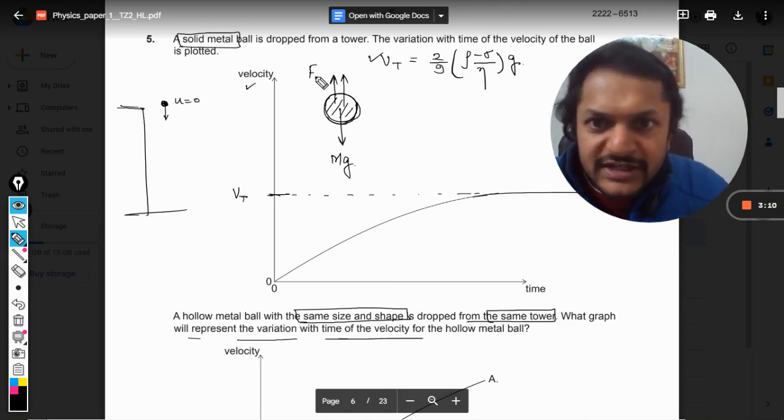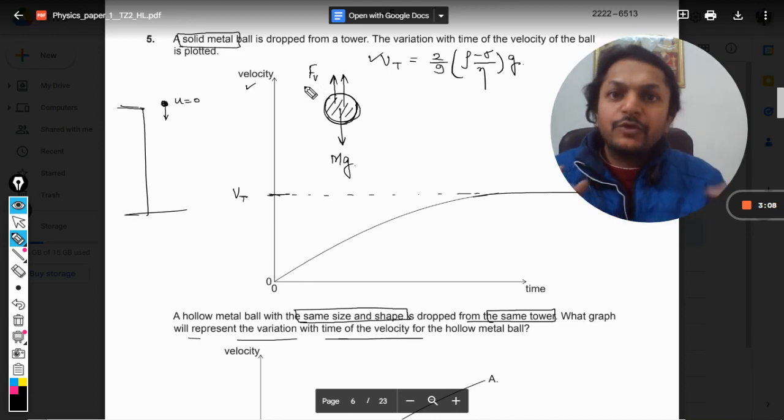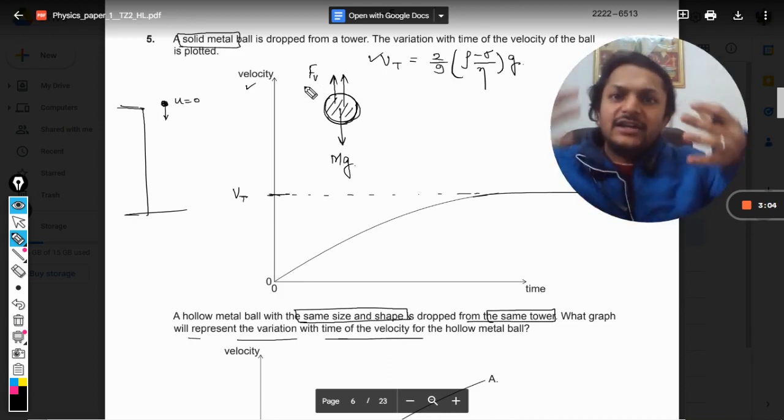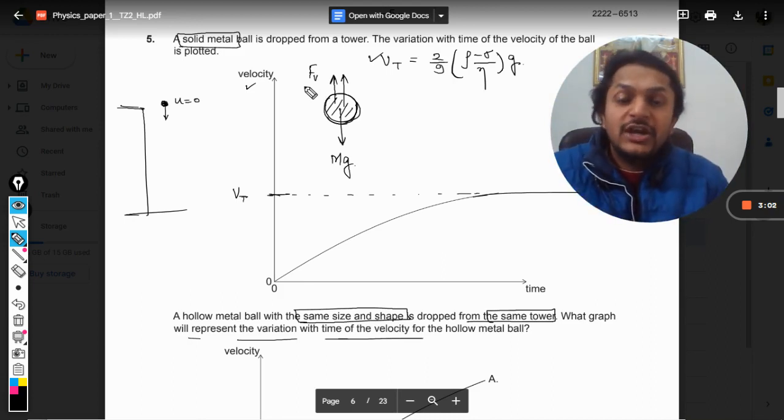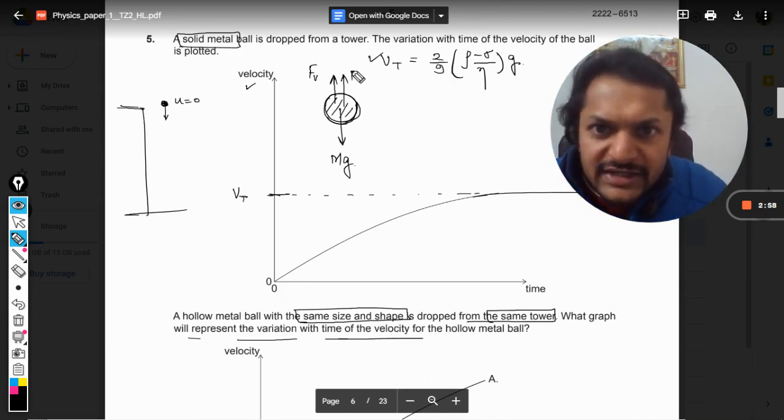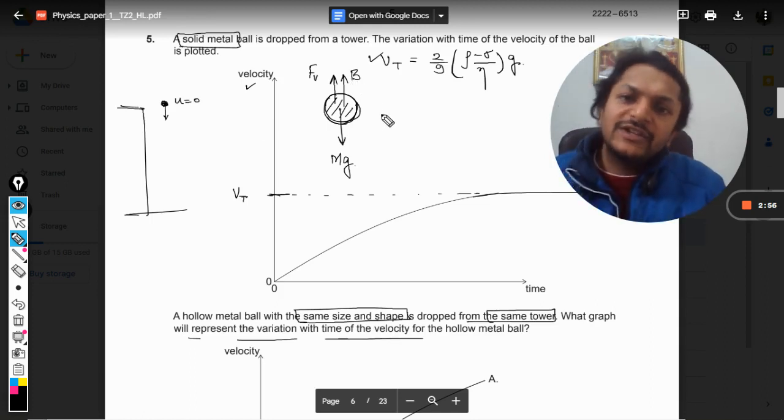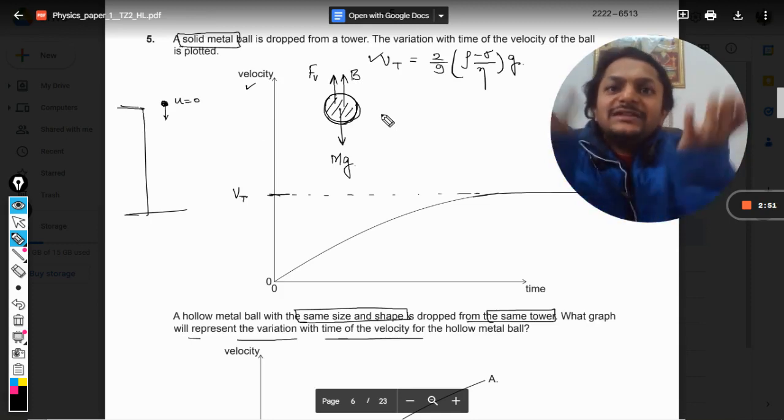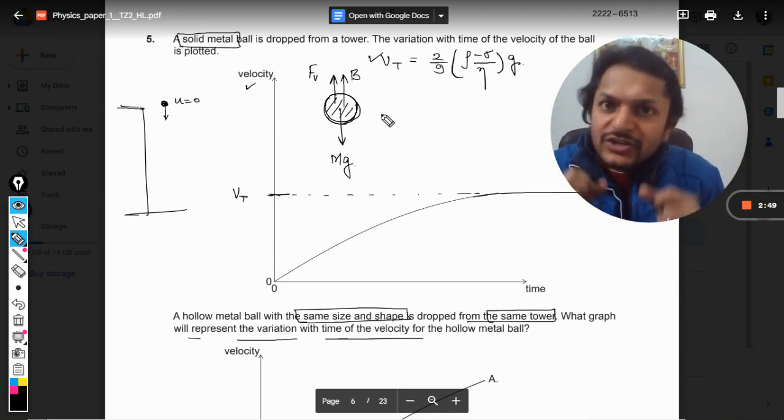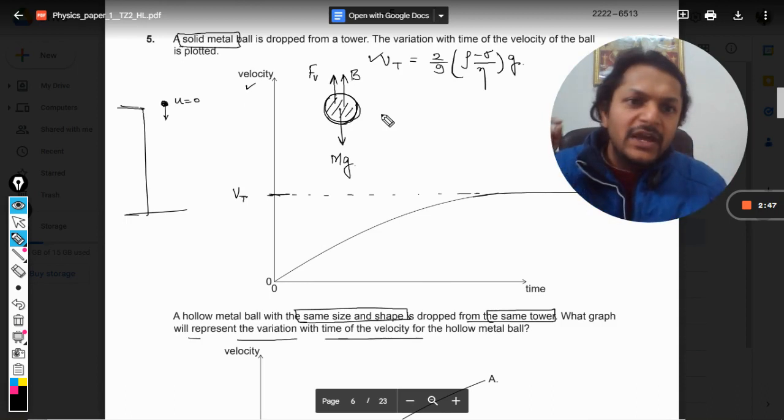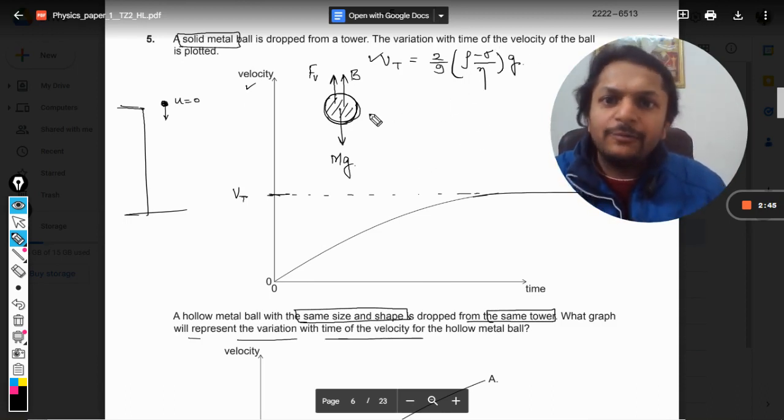The first force is viscous force, which provides friction. The air is trying to drag it - it can be called drag force, frictional force, viscous force. The other force is the buoyant force, known as upthrust. When a body is thrown in water, it experiences an upward force.